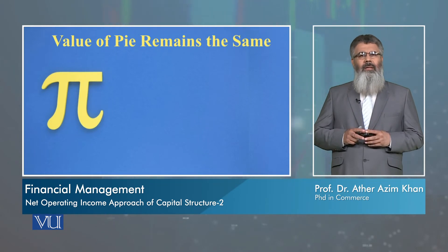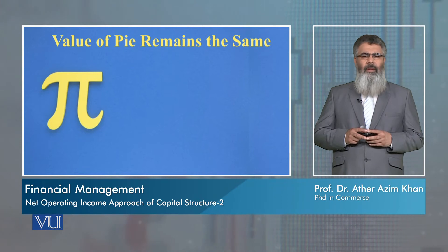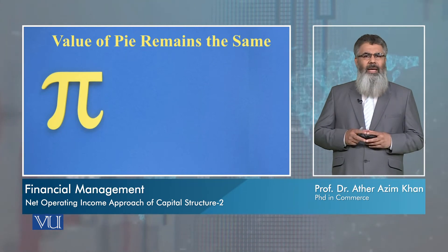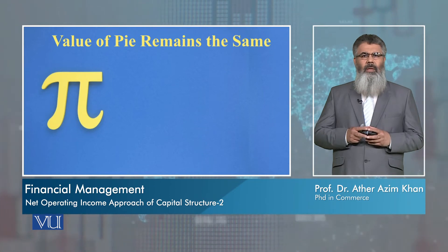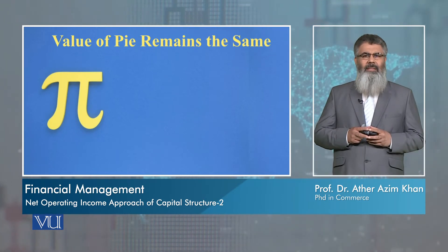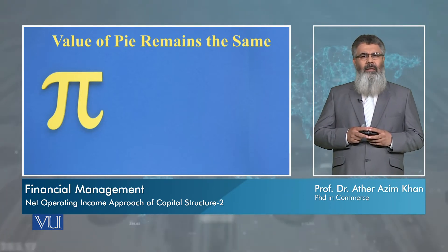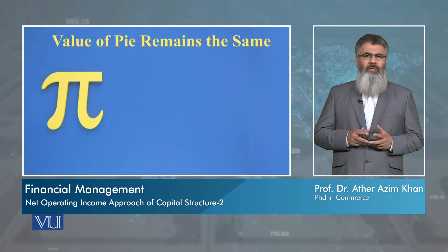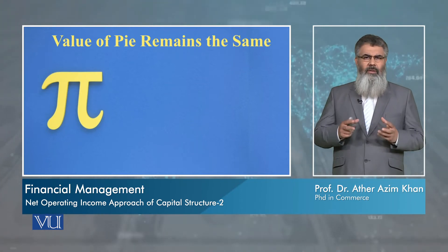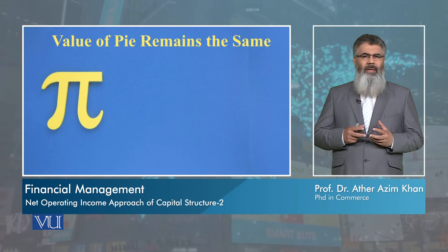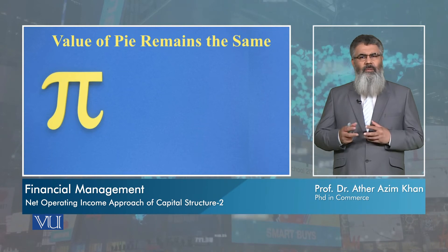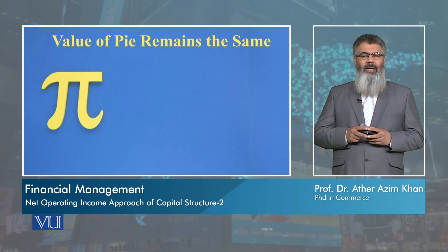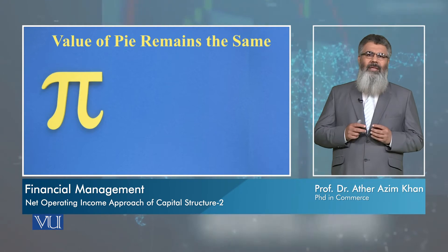This Net Operating Income theory or approach presents a very interesting argument about the value of a pie. The theory is about the value of a circular object — if you want to consider the value of a circular object, it doesn't matter in how many pieces you cut a pie.